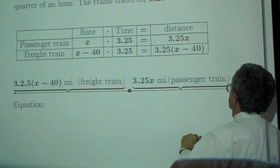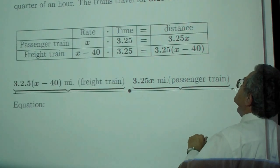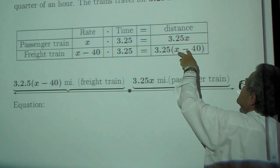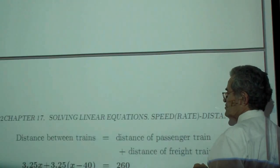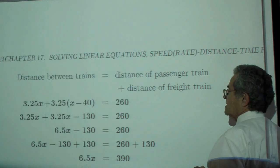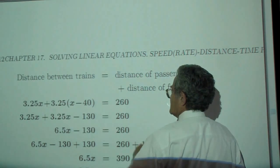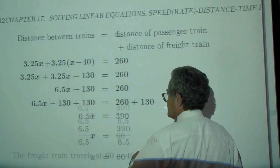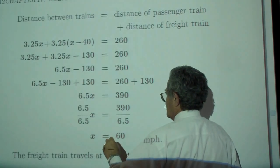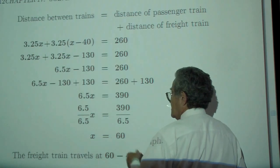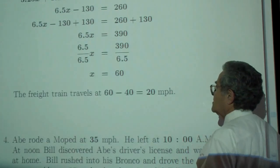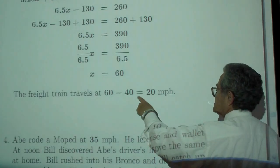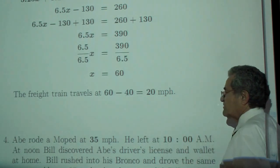They travel in opposite directions, so the total distance is this distance plus that distance, which should be my equation. The sum of the distances is 260. Distribute to get 130, combine like terms, divide by 6.5. X is 60. So the freight train travels at 60 minus 40, or 20 miles per hour.